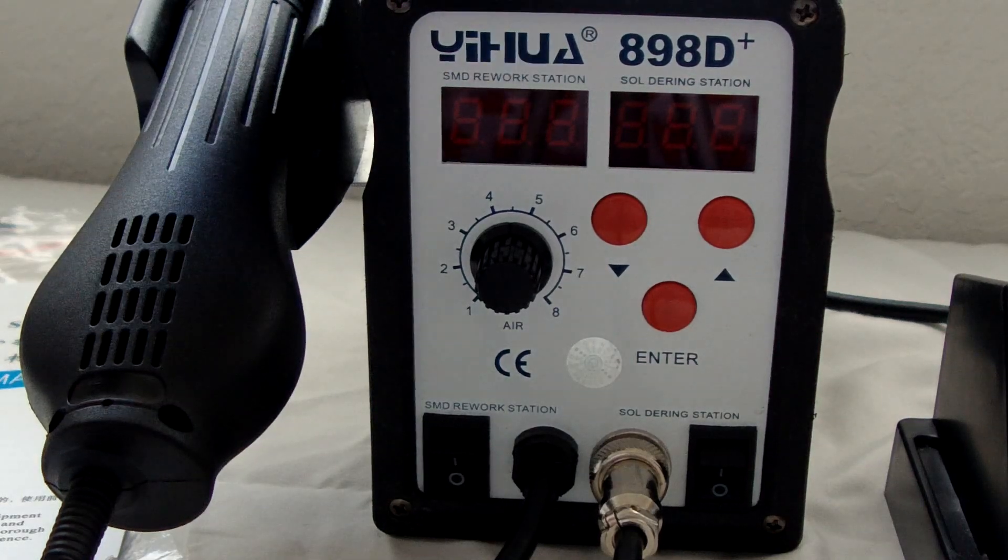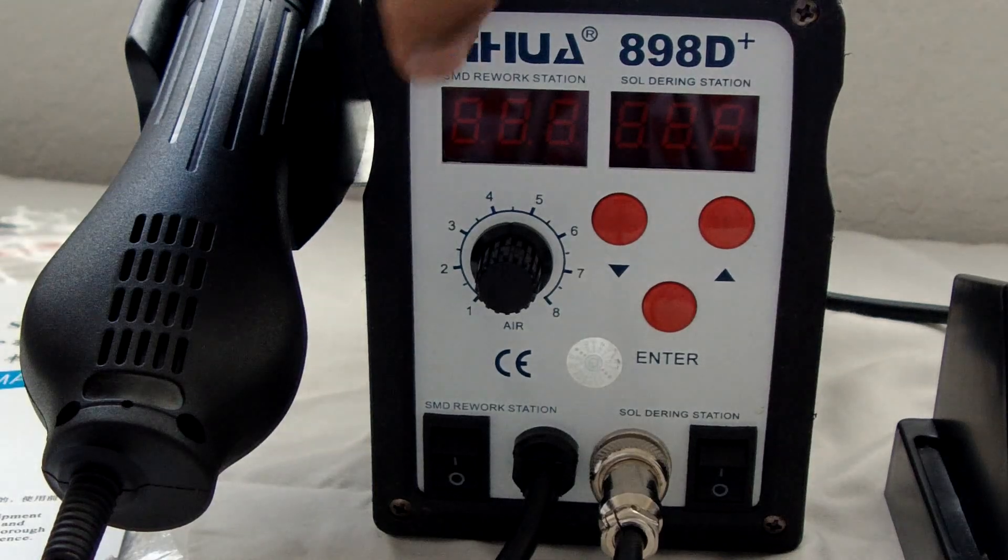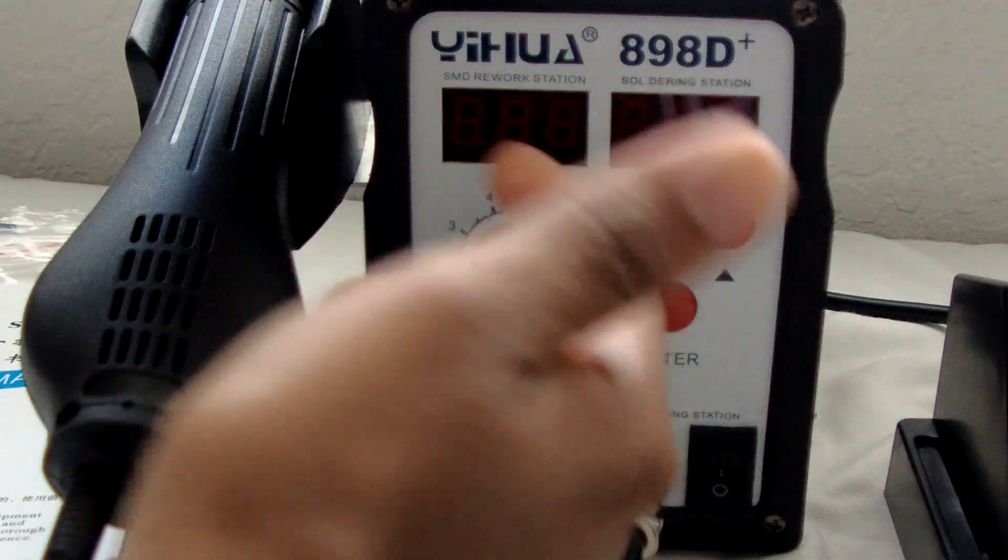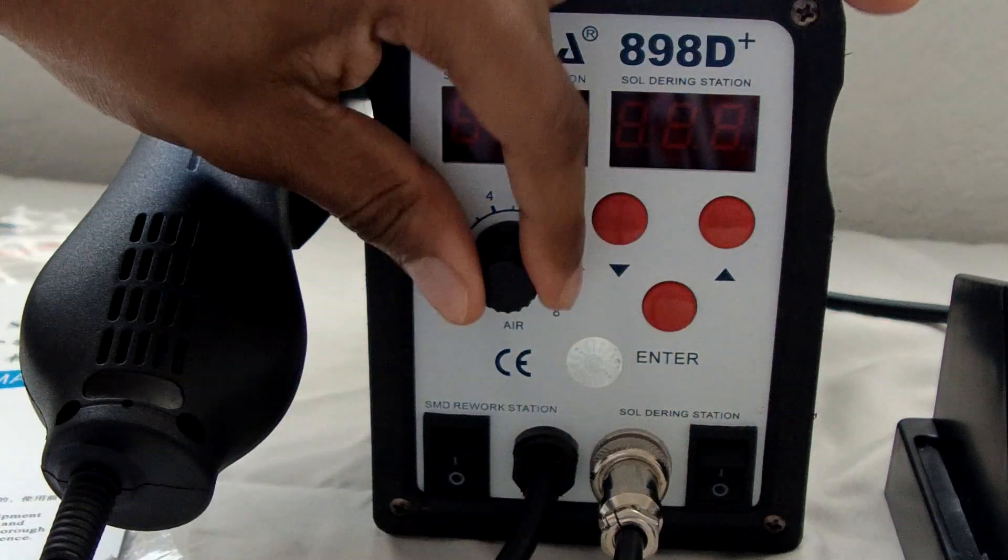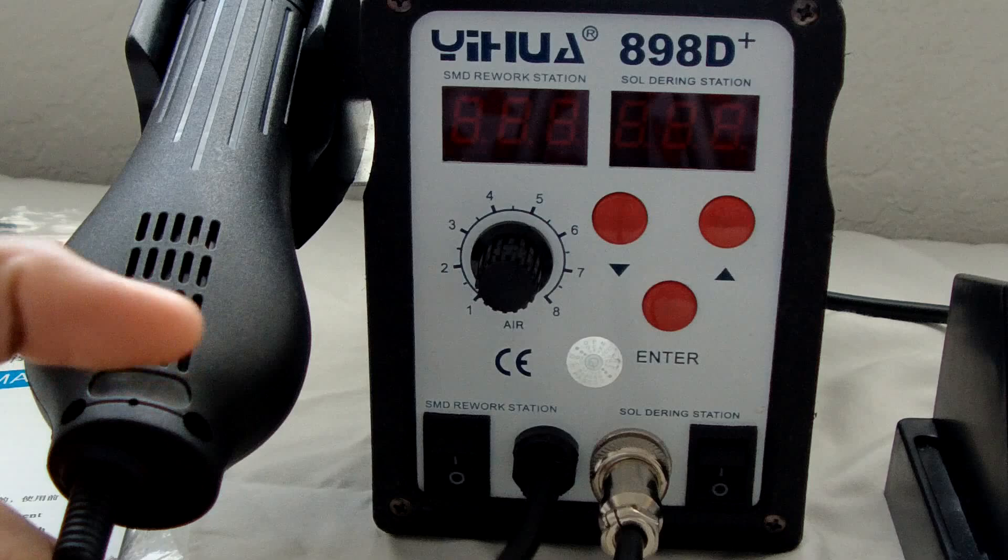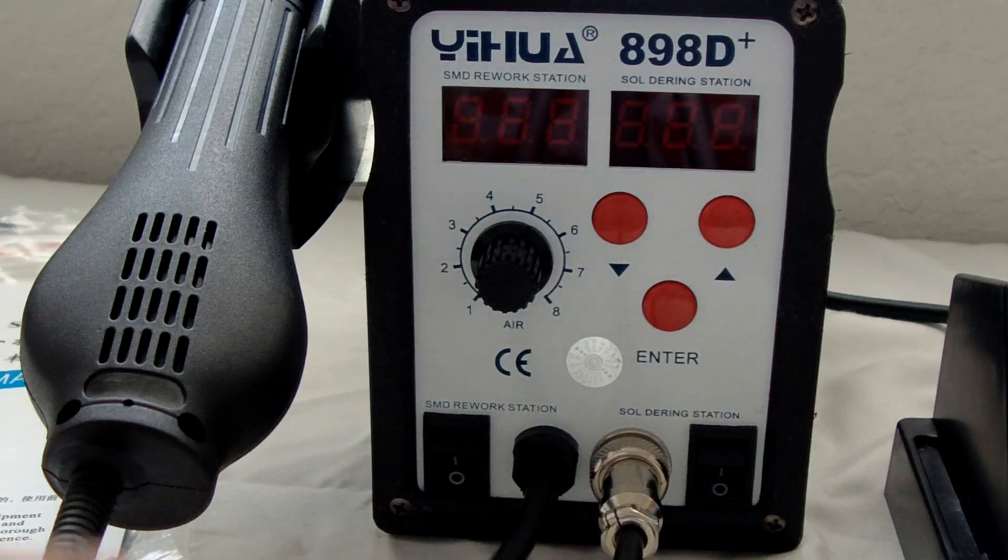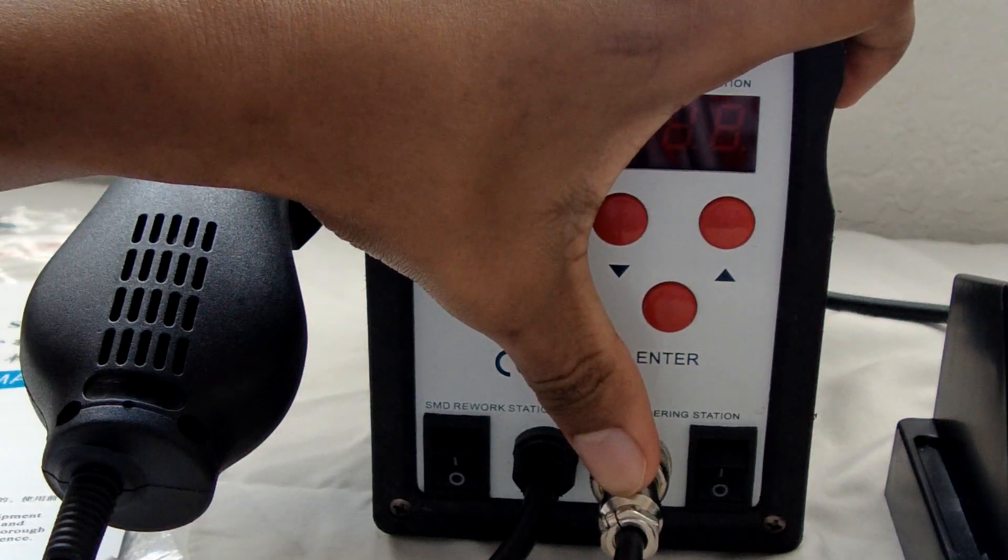So let's start with the air side, the air gun. Over here you have a little three-digit display, your air speed dial thing right here, and a little on and off switch down here. Attached to it is the wire. The wire does not unplug like the soldering iron does.